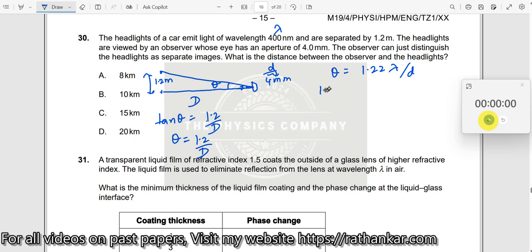When I do this, what do I get? 1.2 divided by d is equal to 1.22 lambda divided by d here. Now, this 1.22 and 1.2 will cancel. I don't want so much accuracy here. So, this is 1 by d is equal to 1.2 meters. I should take care of the units.